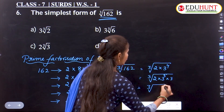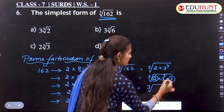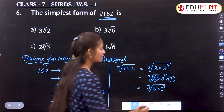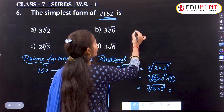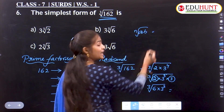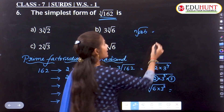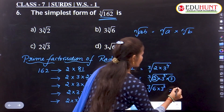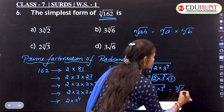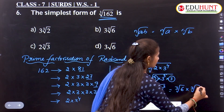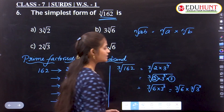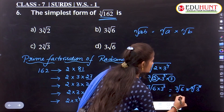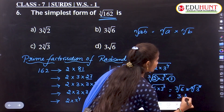We can write this as cube root of (6×3³), since 2×3 = 6. Using the law of radicals, ⁿ√(ab) = ⁿ√a·ⁿ√b, we split it as cube root of 6 × cube root of 3³. The cube root and cube cancel, giving 3·∛6.